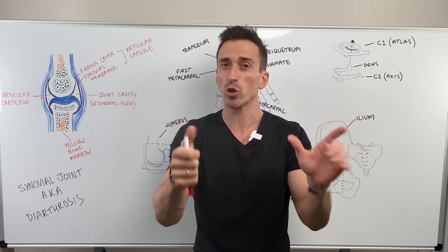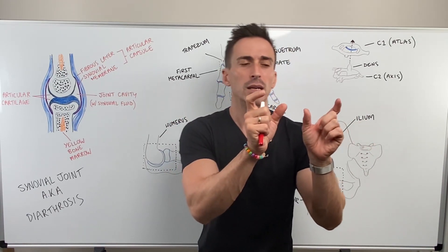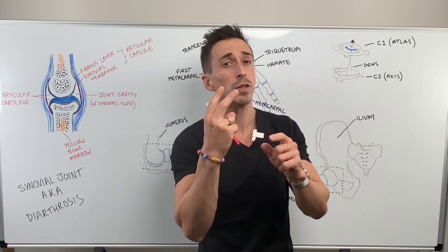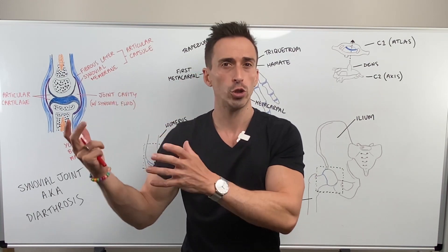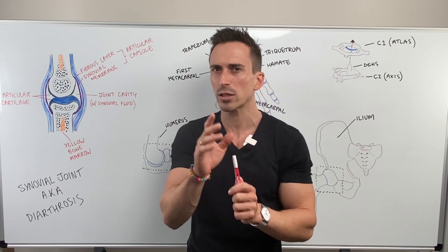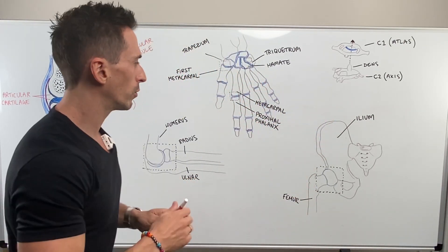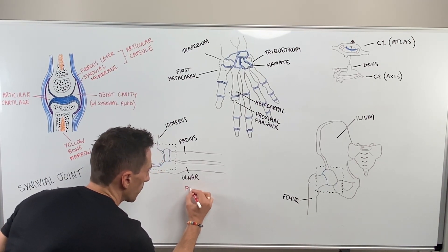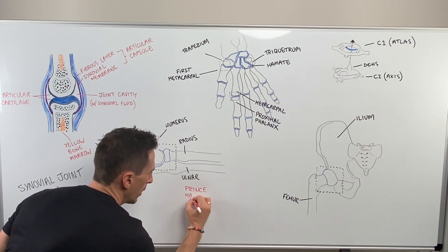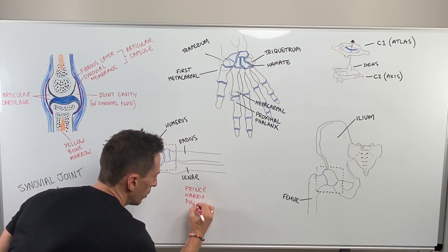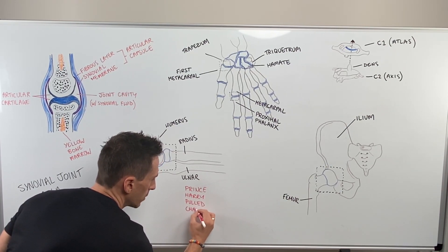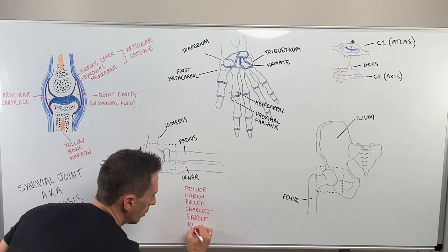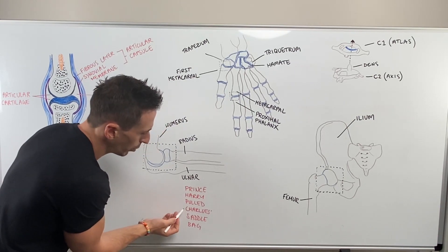There are six different types of synovial joints, and they can be categorized as uniaxial — meaning it only moves in one plane — biaxial, which moves in two planes, and multiaxial, which moves in more than two planes. To help remember the six types, I've created a mnemonic: Prince Harry Pulled Charles's Saddlebag. You can interpret that any way you like — it's a mnemonic that just helps us remember something.